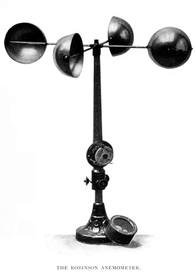A simple type of anemometer was invented in 1845 by Dr. John Thomas Romney Robinson of Armagh Observatory. It consisted of four hemispherical cups mounted on horizontal arms, which were mounted on a vertical shaft. The air flow past the cups in any horizontal direction turned the shaft at a rate roughly proportional to the wind speed. Counting the turns of the shaft over a set time interval produced a value proportional to the average wind speed. It is also called a rotational anemometer.